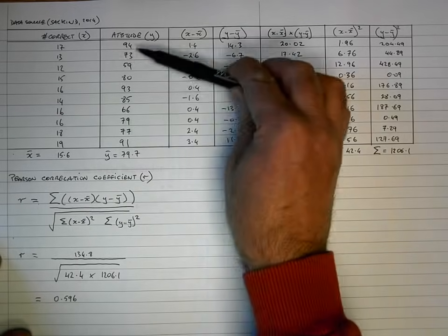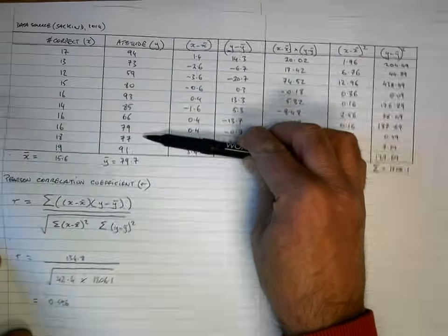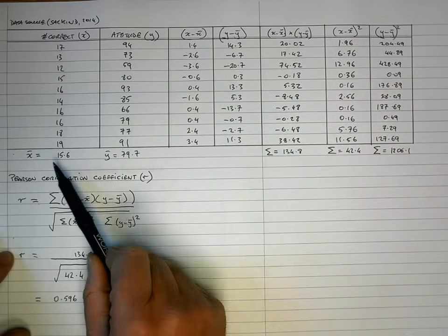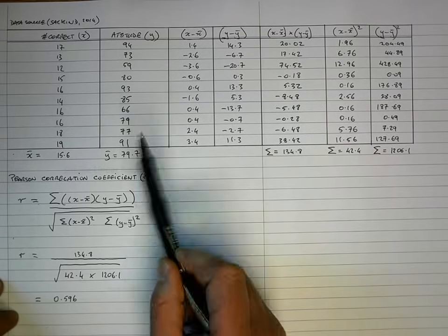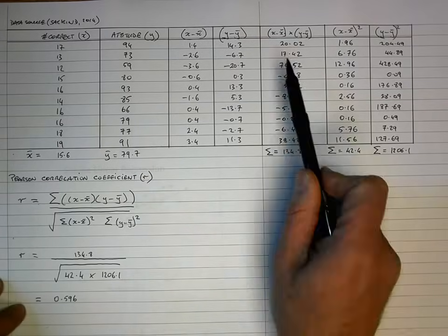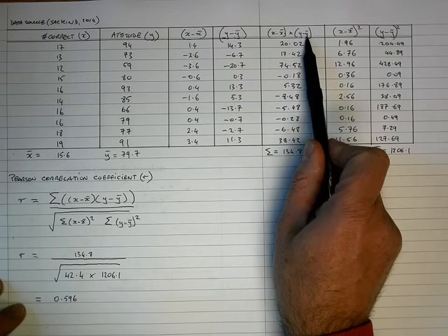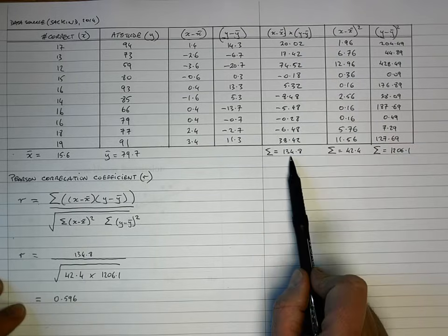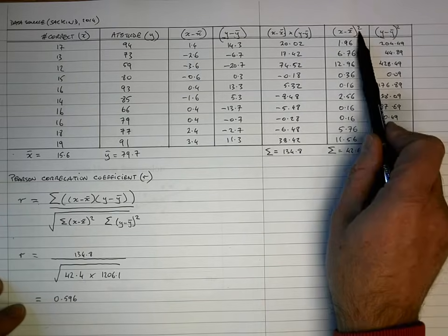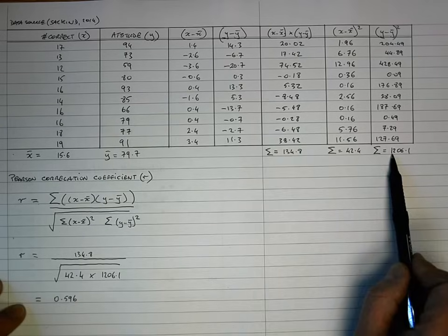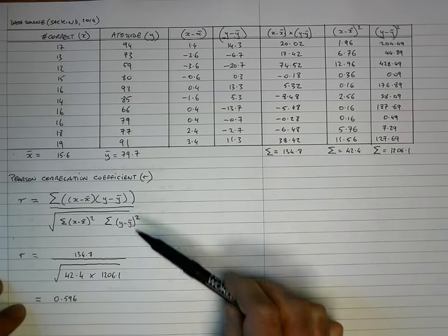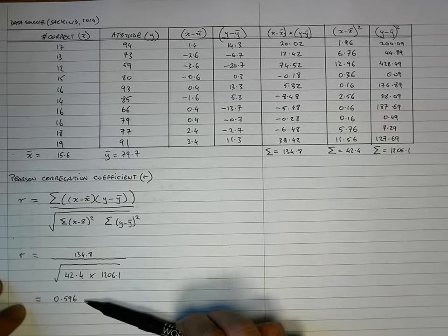In brief, these are the same sets of values as before for the number of questions correct and the attitude to test scores. I've calculated the mean of each: the mean of x is 15.6 and the mean of y is 79.7. To work out my values for the R equation, I've taken each value of x minus the mean multiplied by each value of y minus the mean of y, and summed those values. I also have the sum of (x minus x-bar) squared and the sum of (y minus y-bar) squared, giving a correlation coefficient R of 0.596 — a moderate to strong positive correlation.